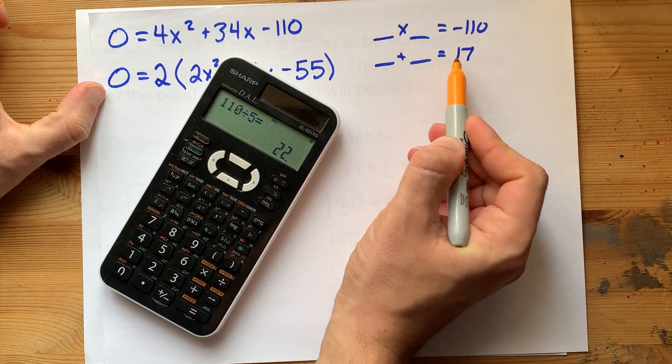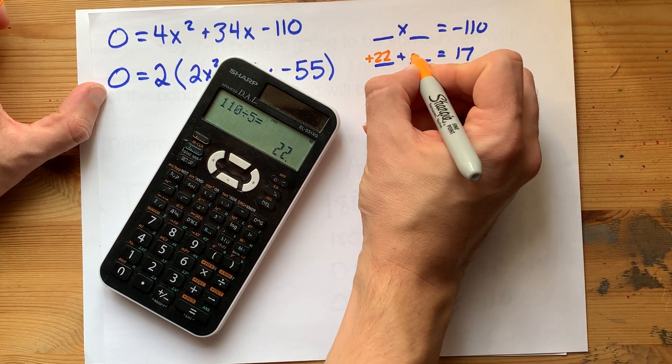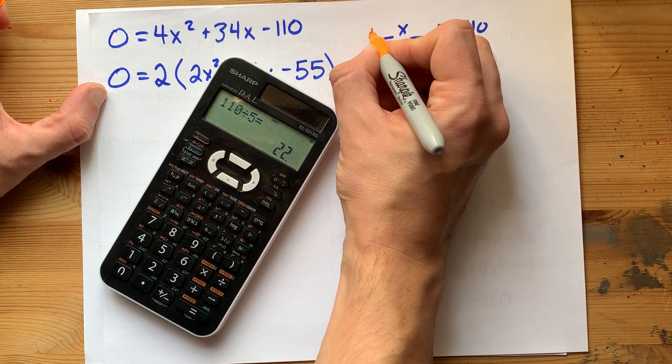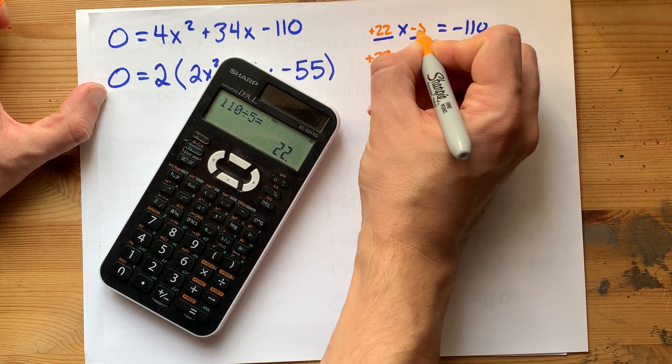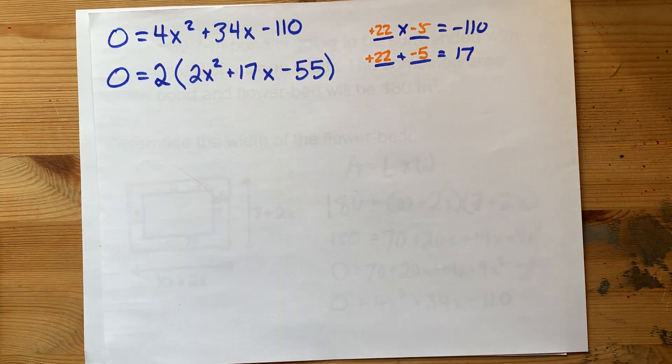They have to multiply to a negative number anyways. So either 5 or 22 have to be negative. And they have to add to a positive number. So I'm venturing to guess that we have a positive 22 and a negative 5. Positive 22 times negative 5 is negative 110. Positive 22 plus negative 5 is positive 17. These are my numbers.